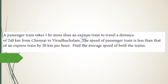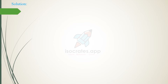The passenger train travels from Chennai to Virudachalam, a distance of 240 kilometers. We need to find the speed of both trains. Let the speed of the express train be x km/h. Since the passenger train is slower by 20 km/h, the speed of the passenger train is x minus 20 km/h.